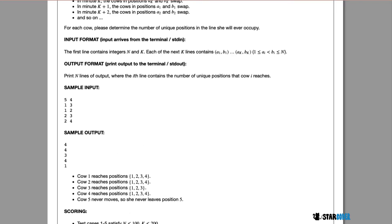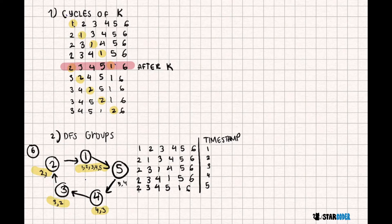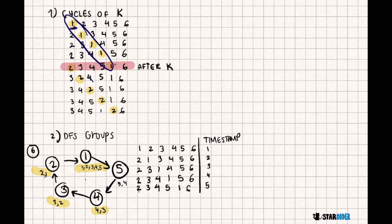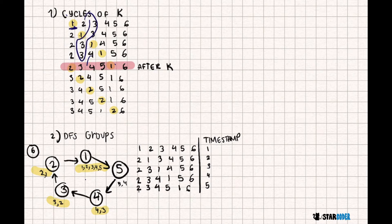Let's look at the algorithm for this question. Before we start, there are a couple of key observations. The main observation is that if I start at position 1 and go through k swaps, the path I take is going to be exactly the same no matter what number it is. So for position 1, it goes through this path; for position 2, this path; position 3, this path, and so on. This is important because we're going to use a DFS to create groups.